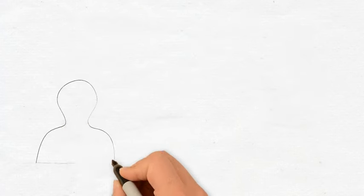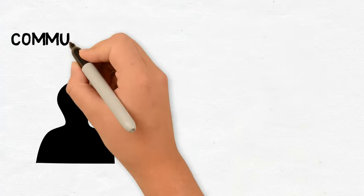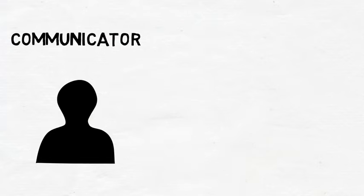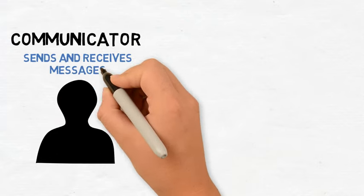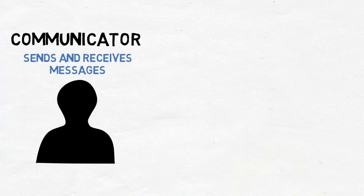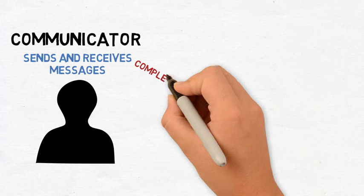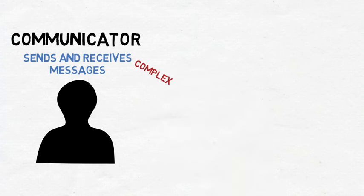Let's start with a single individual — a communicator. A communicator is a person who sends messages to and receives messages from other people. While this definition of a communicator might seem simple on the surface, it's more complex than it seems and needs further explanation. In the communication process, the acts of sending and receiving are fairly complex.